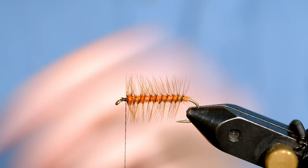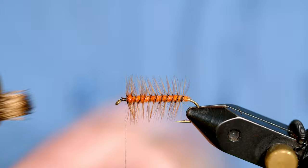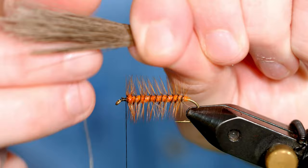Now this is a nice size chunk of elk. You're going to stack it and you're going to take that with your left hand and pull it out. If there's any errant fibers, you can pluck those out.